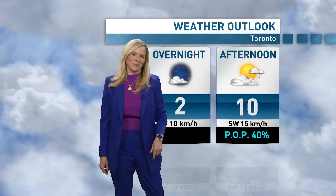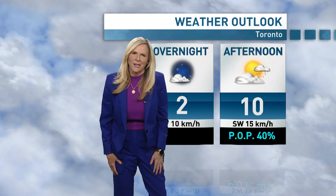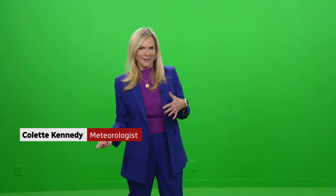10 degrees tomorrow afternoon with that 40% probability of precipitation — 40% chance of rain. Do you know what that means? Is it gonna rain 40% of the day? Is it gonna rain on 40% of us? Is there only a 40% chance it's gonna rain at all?